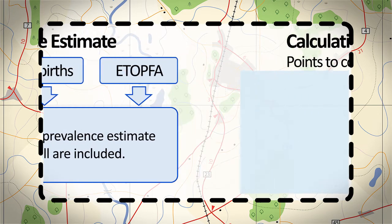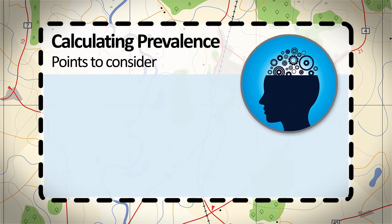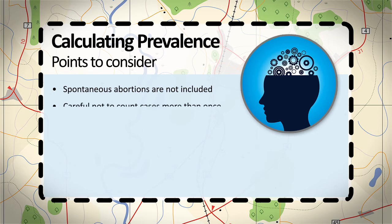Spontaneous abortions, also called miscarriages, are not included in prevalence calculations because of the difficulty of collecting data on all spontaneous abortions. Population or hospital-based programs should be careful not to count cases more than once, since they may be capturing cases from different data sources.